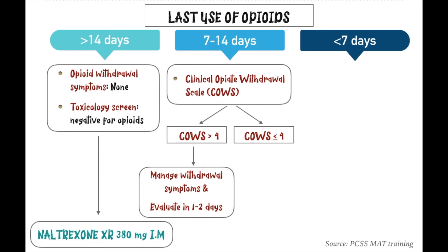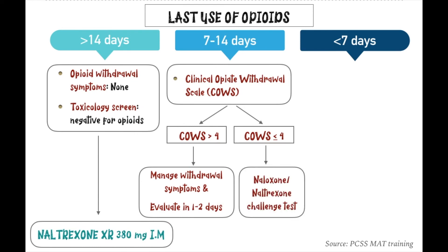If the patient has a COWS score of four or less, you need to do either a Naloxone challenge test or a Naltrexone challenge test before moving forward. I will also discuss these two tests in a few minutes. That's the basic framework for patients presenting within seven to fourteen days — the COWS scale is key to the decision.